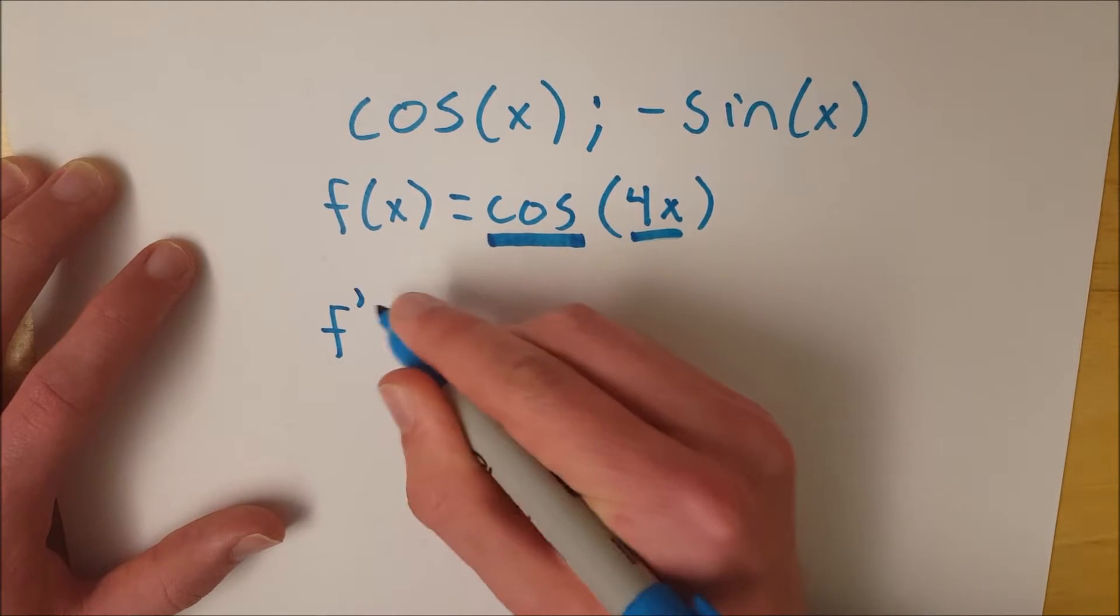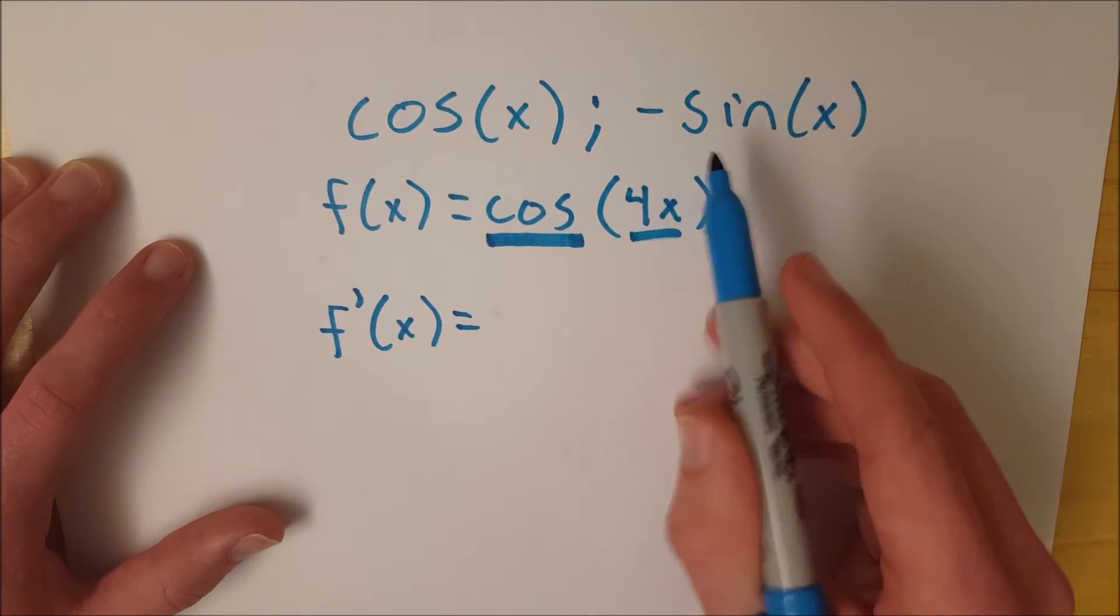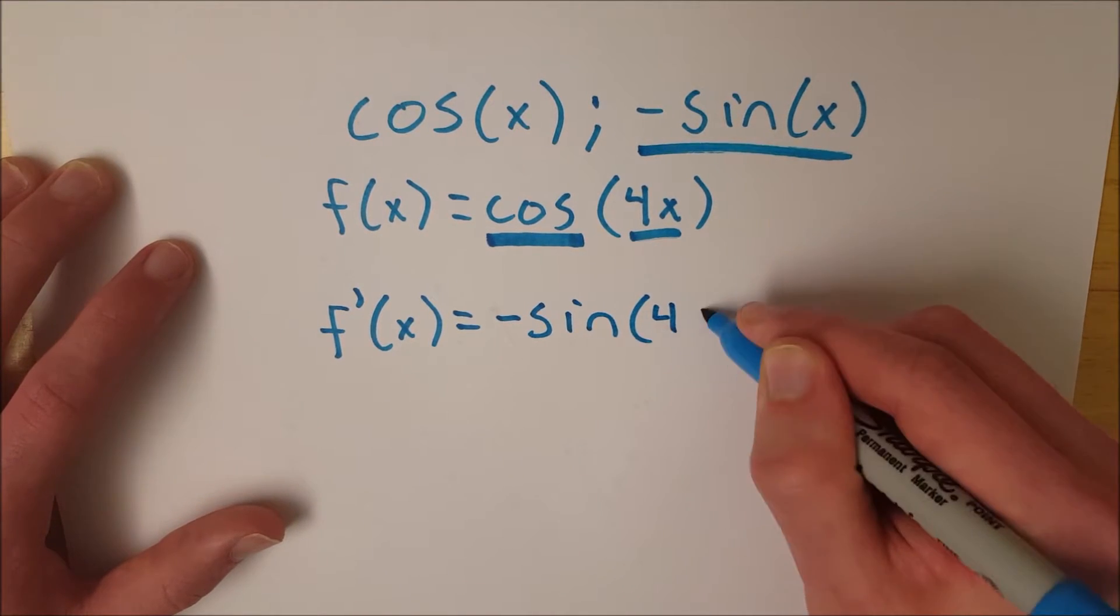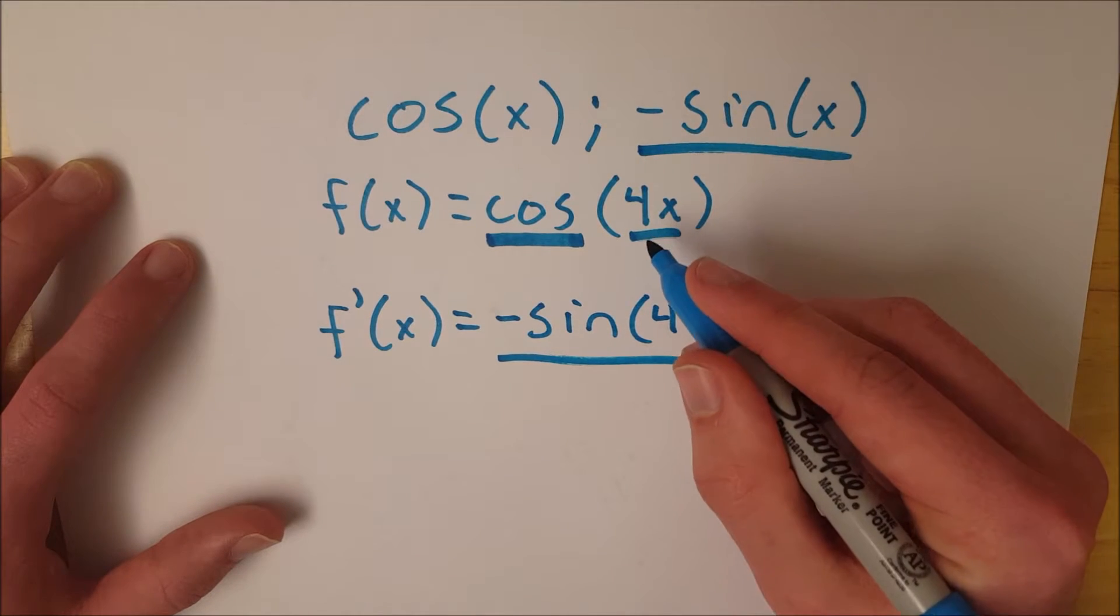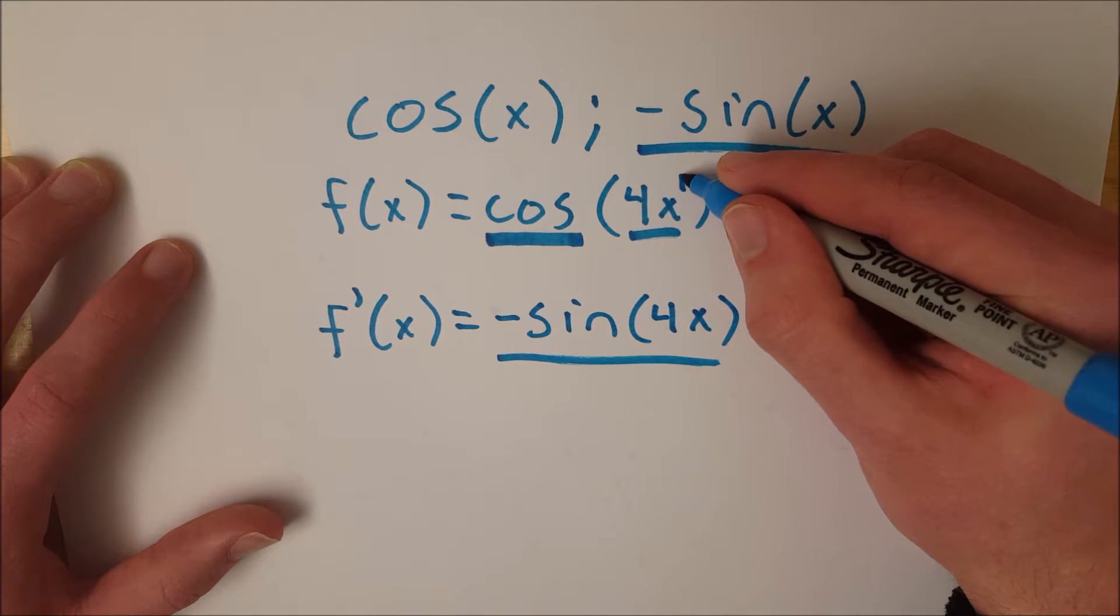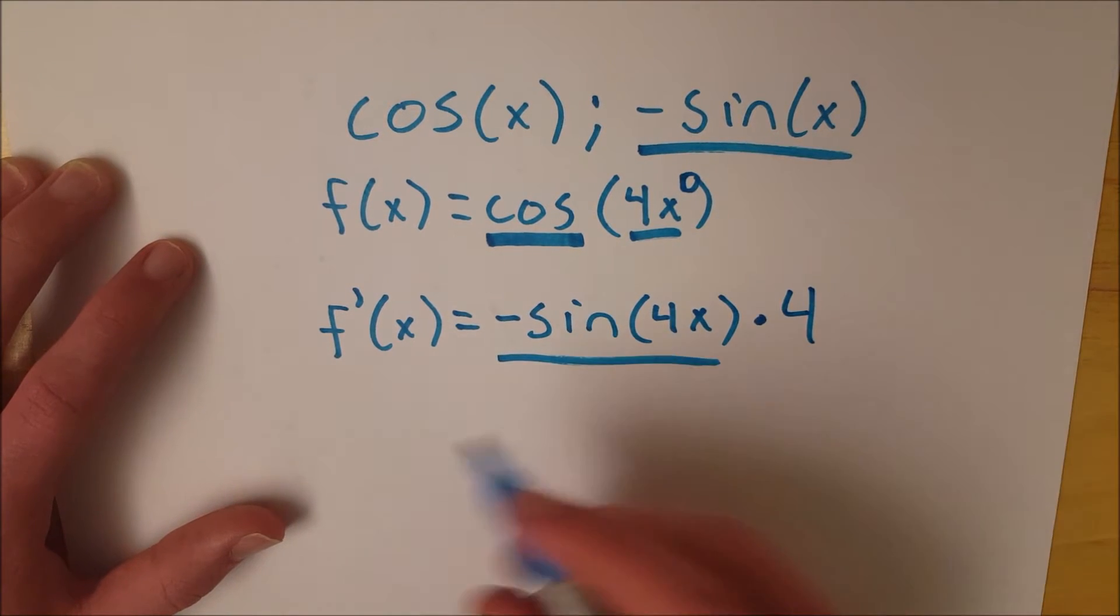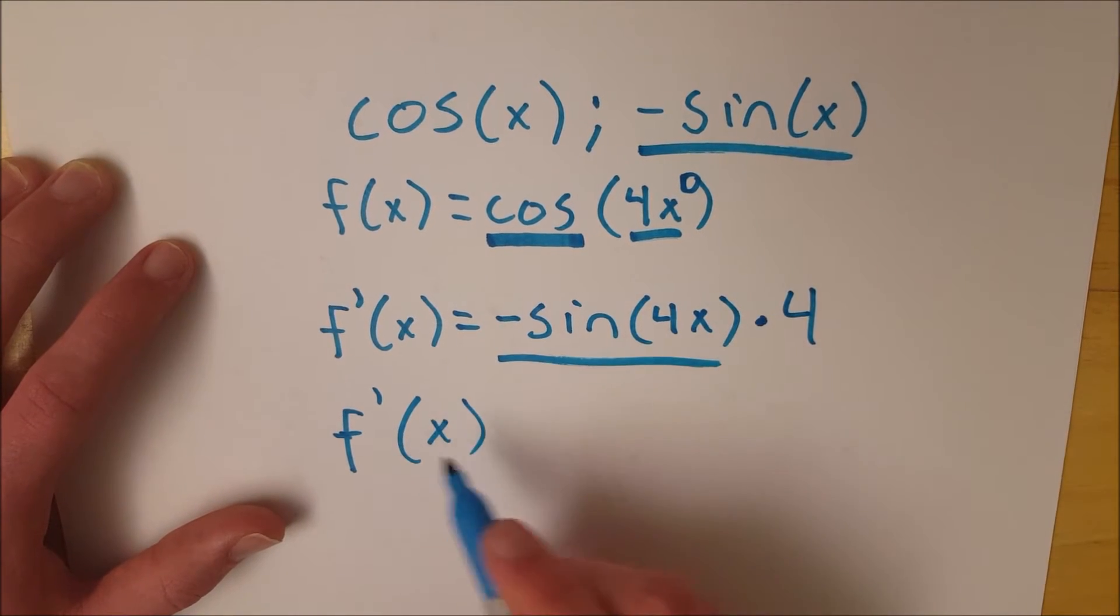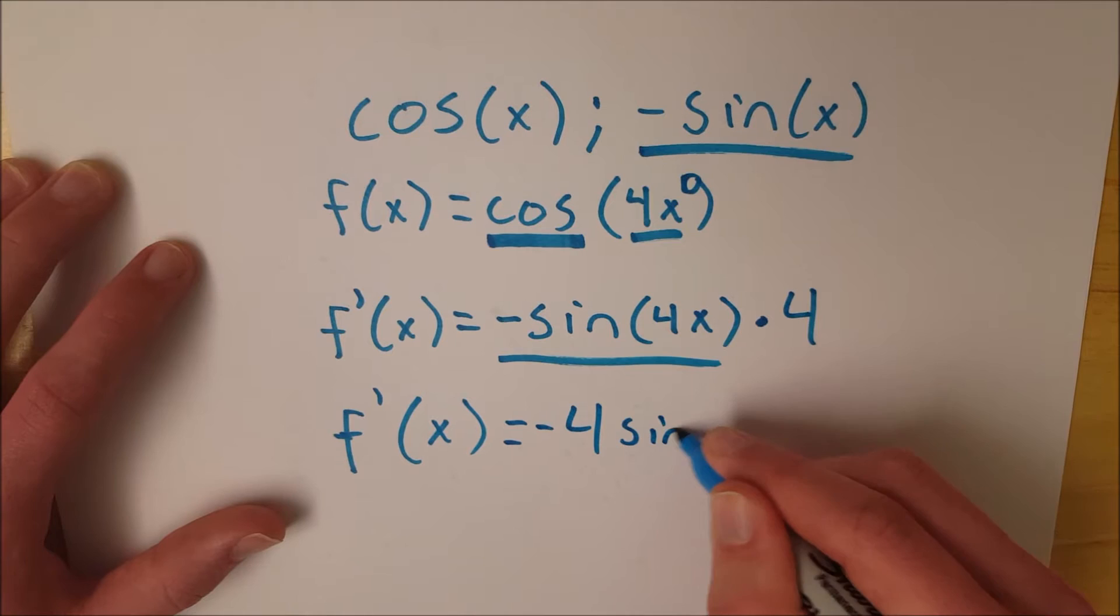So write this out. The derivative of f of x equals first you take the derivative of the outside function, which we already said is negative sine. Negative sine of the stuff inside. Again we leave that untouched, that's just 4x, and then you multiply this whole thing by the derivative of the inside function. The exponent here is 1. You bring the 1 down, that's 4 times 1. This exponent goes to 0 which means this is also a 1. 4 times 1 times 1 is 4. And then just to rewrite that in more attractive terms, the derivative of cosine of 4x is equal to negative 4 sine of 4x.